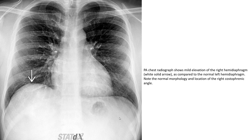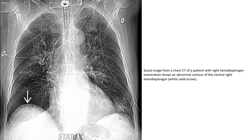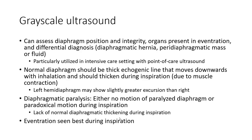On chest radiograph, there is marked elevation of the right hemidiaphragm compared to the normal left hemidiaphragm, with normal morphology and location of the right costophrenic angle. CT of the chest demonstrates an abnormal contour of the central right diaphragm consistent with diaphragmatic eventration.